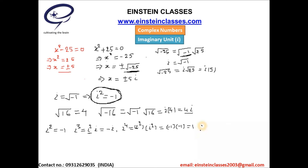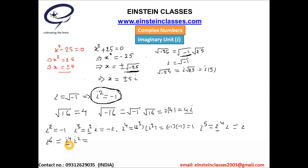Now find the value of i to the power 5. This equals i to the power 4 times i. Since i to the power 4 is 1, i to the power 5 equals i. For i to the power 6, written as i to the power 4 times i squared: since i to the power 4 is 1 and i squared is minus one, i to the power 6 equals minus one.